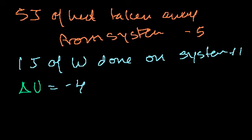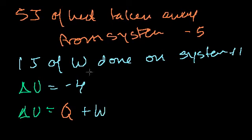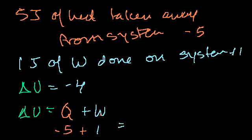We can do that more formally with the formula: delta U equals heat added to the system plus work done on the system. Heat added was minus 5 joules (since heat was taken away), plus work done on the system of plus 1 joule. We get delta U equals minus 4 joules — the same result.